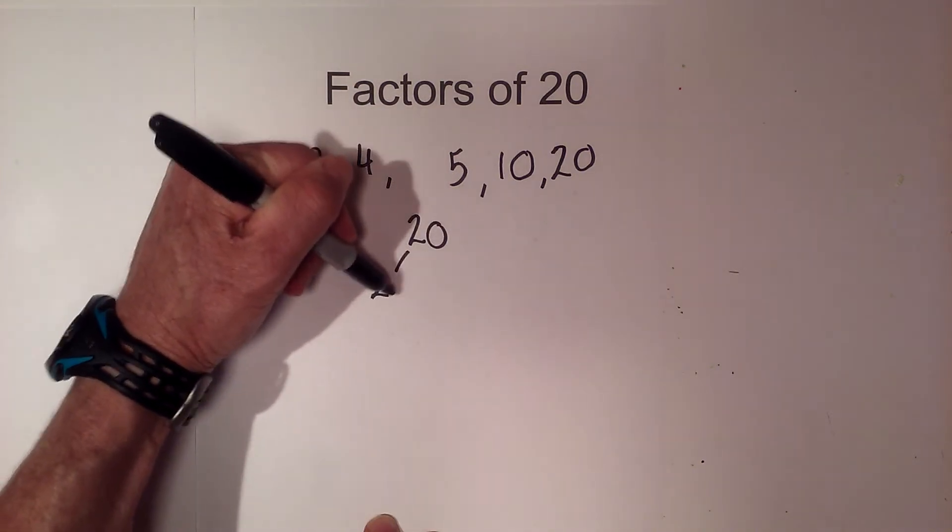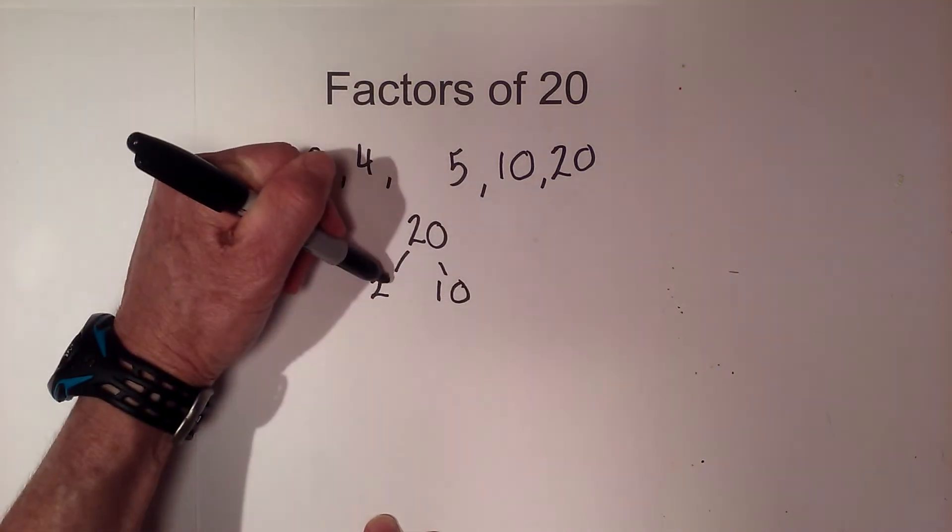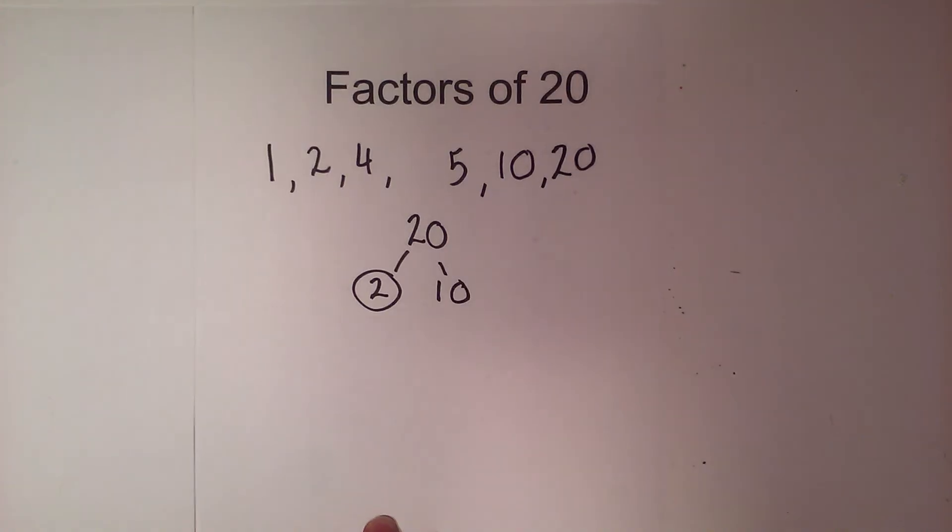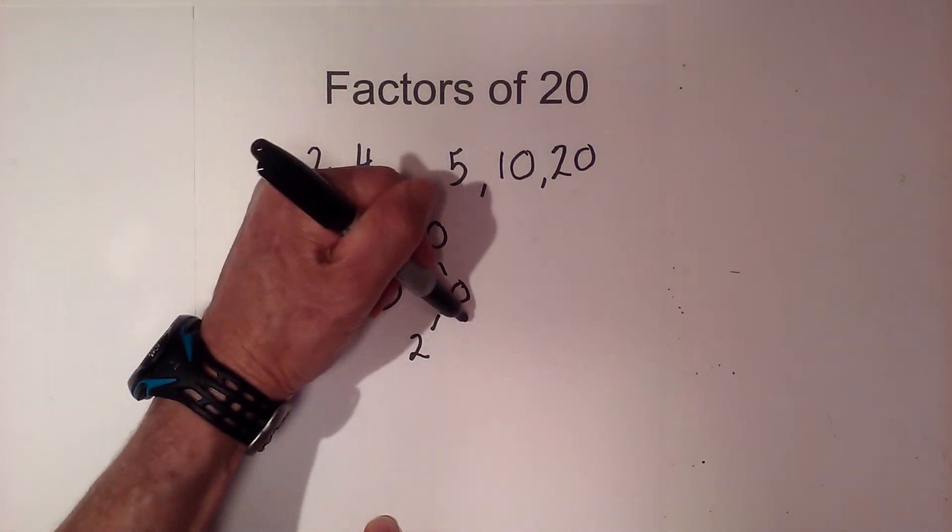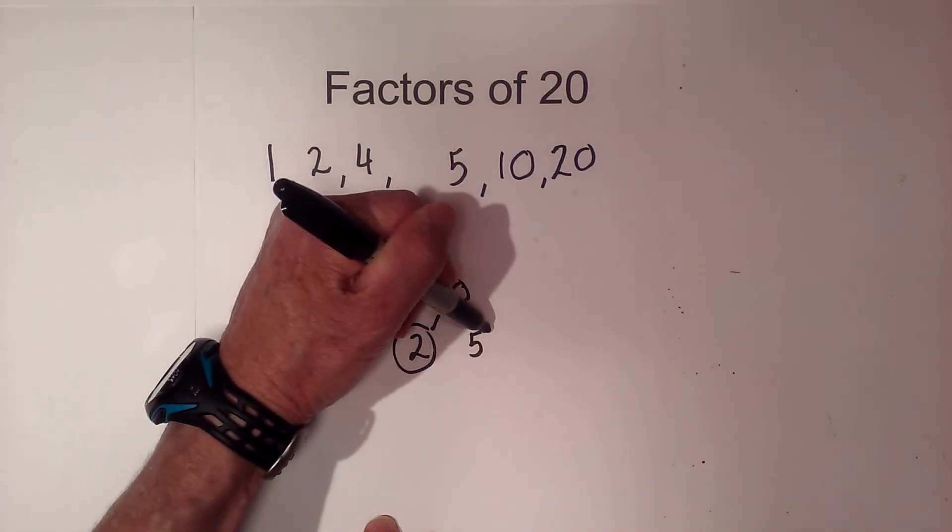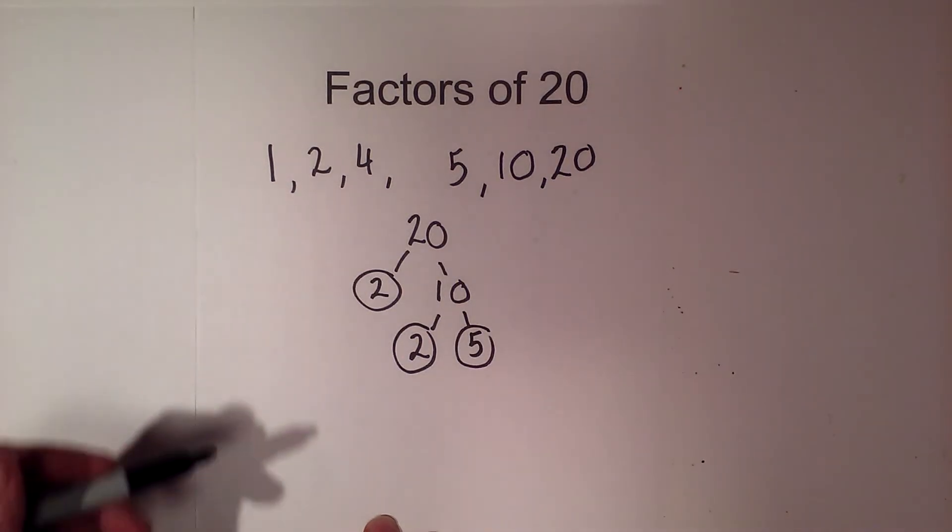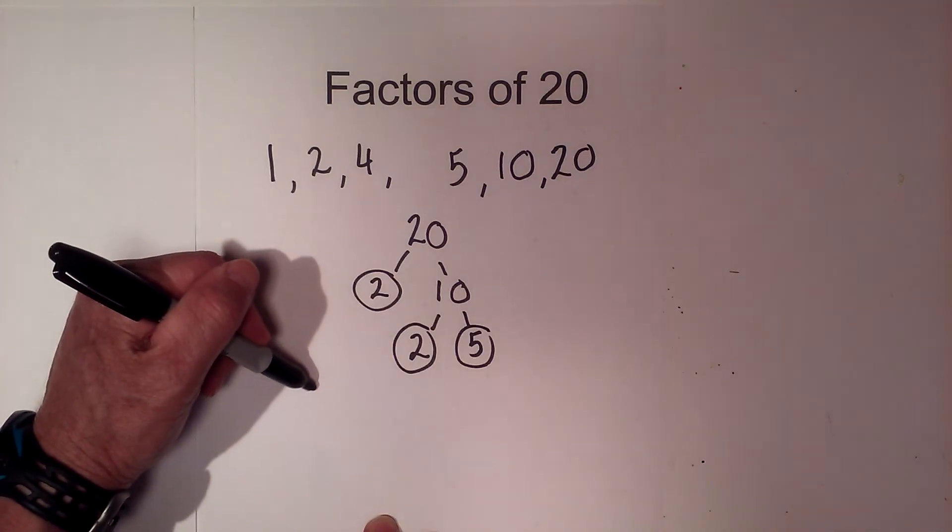So I'm going to go 2 times 10 equals 20. Circle the 2 because it is prime. And now 2 times 5 equals 10. Circle both of these because they are prime.